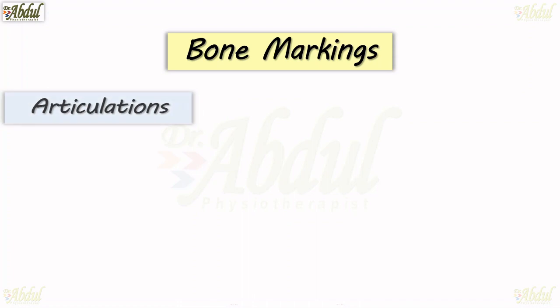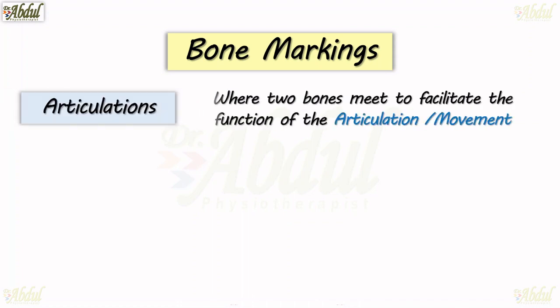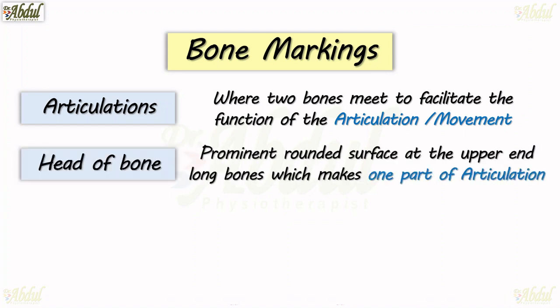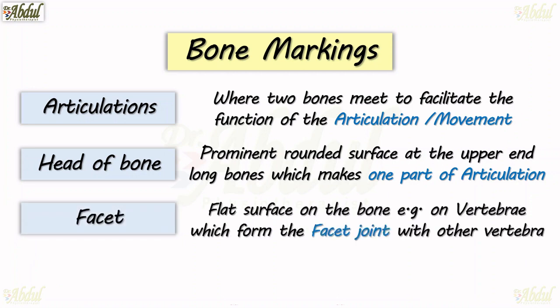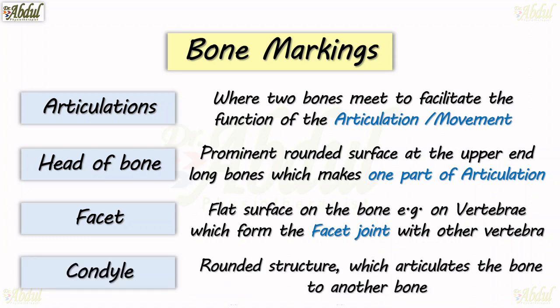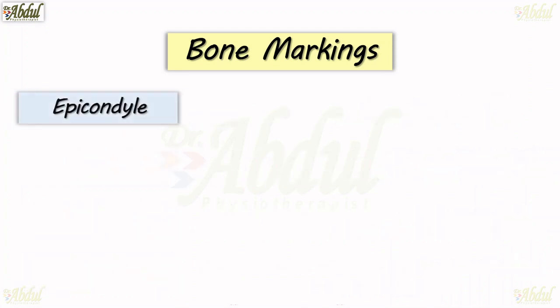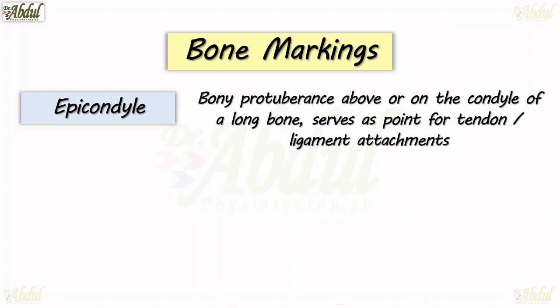Bone markings — let's see them one by one. Articulations: where two bones meet to facilitate the functions of articulation or movement. Head of the bone: a prominent rounded surface at the upper end of long bones which makes one part of an articulation. Facet: a flat surface on the bone — example, vertebrae which form the facet joint with other vertebrae. Condyle: a rounded structure which articulates one bone to another. Epicondyle: a bony protuberance above or on the condyle of a long bone, serving as a point for tendon or ligament attachment.